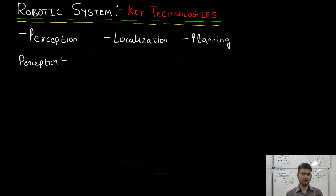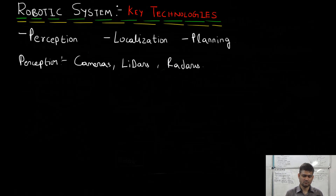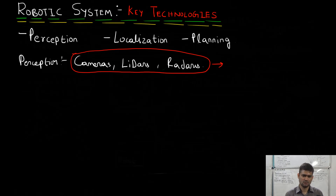Perception algorithms take data as input from the sensors mounted on a robot. Typically, a robotic system has the following sensors: a camera or multiple cameras, lidars, and perhaps radars. The perception algorithms take the data from these sensors and process it to build a 3D or perhaps a projected 2D semantic representation of the world around the robot.